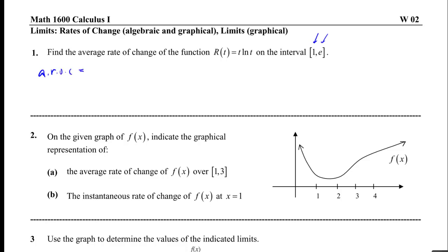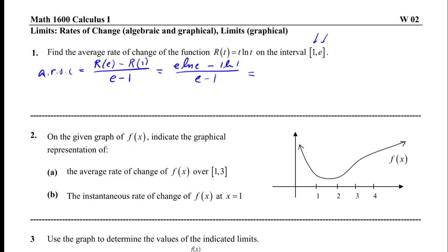The average rate of change is r(e) minus r(1), over e minus 1 — the difference in the x-values. Since r(t) = t·ln(t), we get e·ln(e) minus 1·ln(1), all over e minus 1. Now simplifying: ln(e) = 1, so e·ln(e) = e. And ln(1) = 0, so we get e minus 0 over e minus 1.